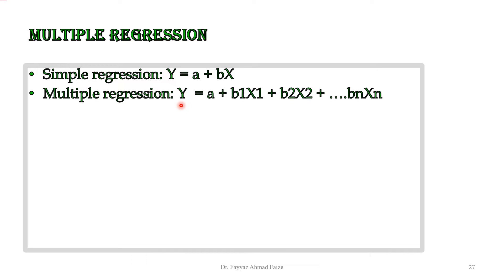In multiple regression, y is equal to a plus b1 times x1, where x1 is your first predictor variable. Our second predictor variable is x2, and if we have other predictor variables they become x3, x4, and so on. b1 is the coefficient of x1, b2 is the regression coefficient of x2, and so on — each variable has its corresponding coefficient.